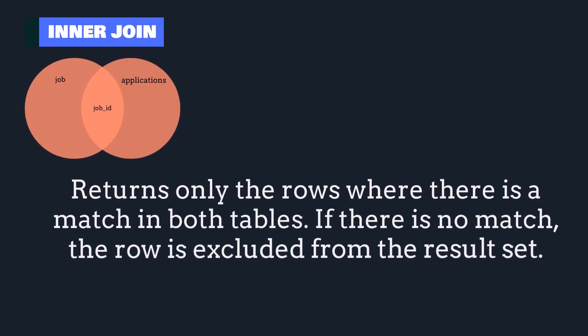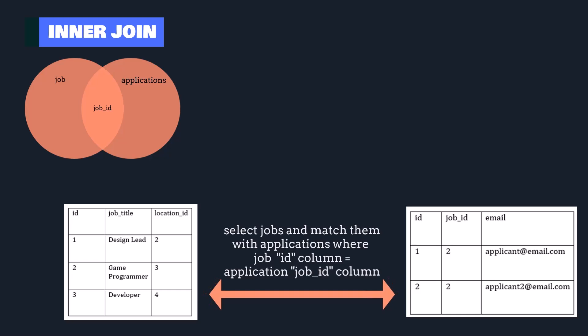An inner join in SQL combines rows from two tables based on a specified condition and returns only the rows where there is a match in both tables. If there is no match, those rows are excluded from the result set. For example, in our database we have two tables: jobs and job applications.